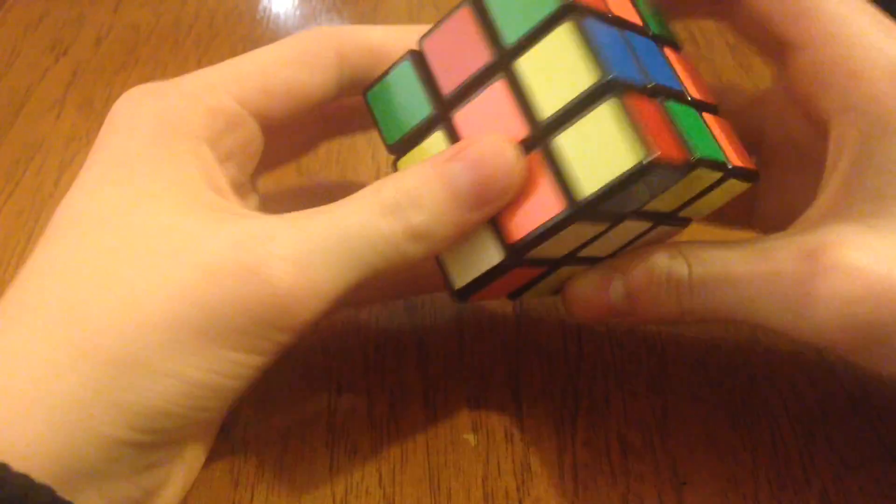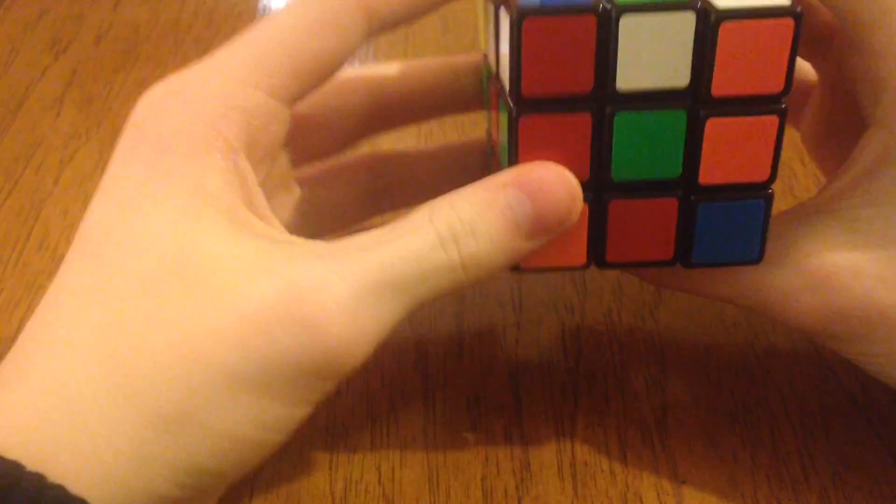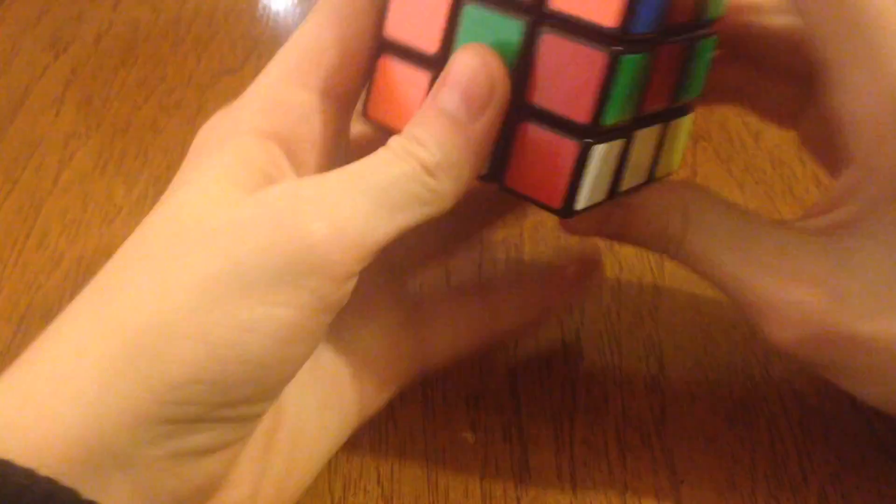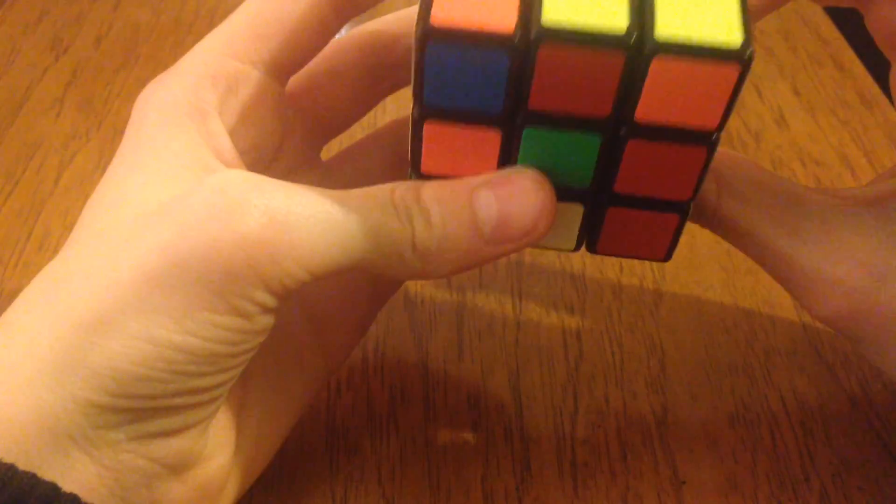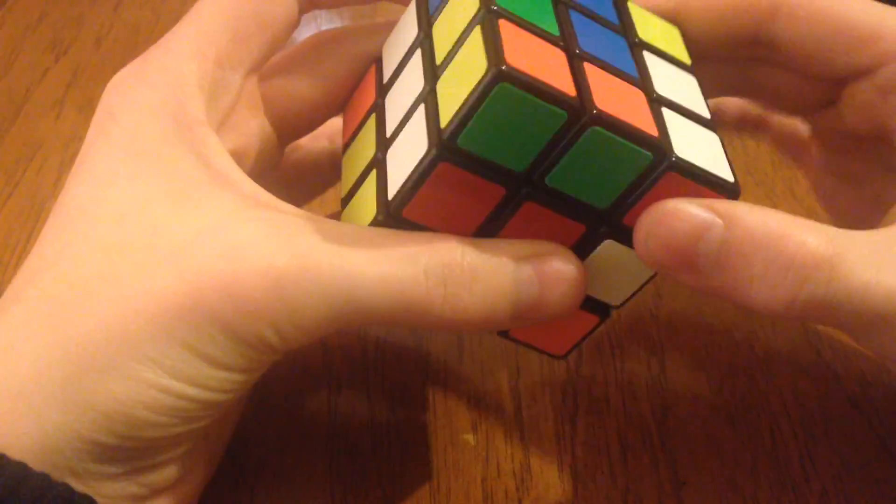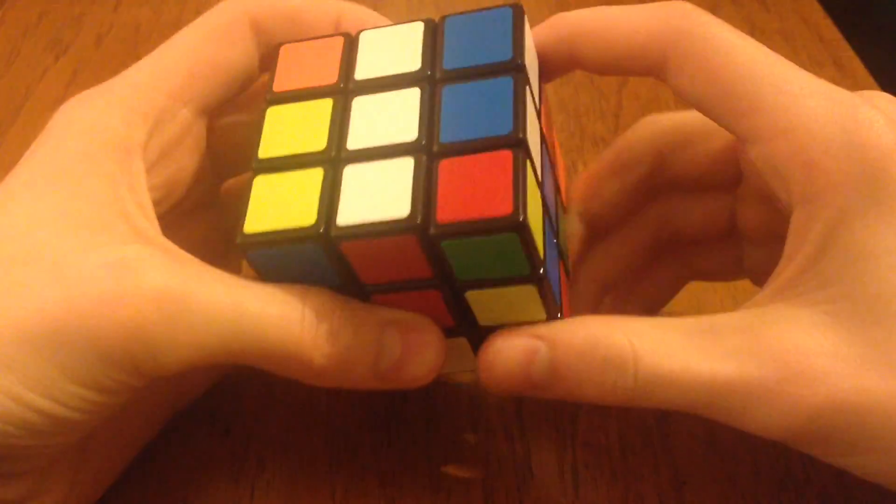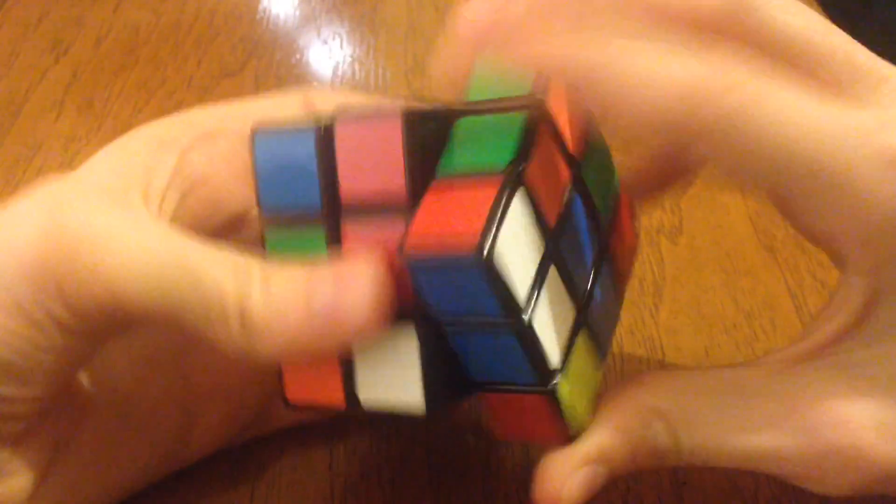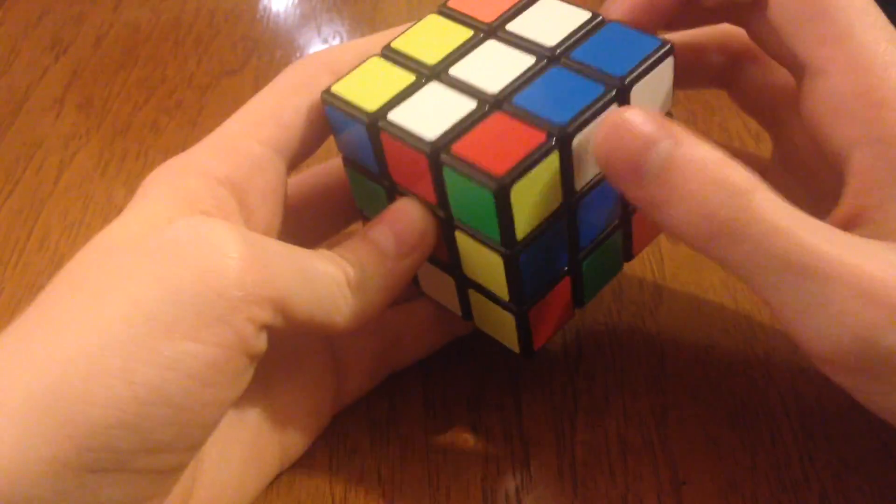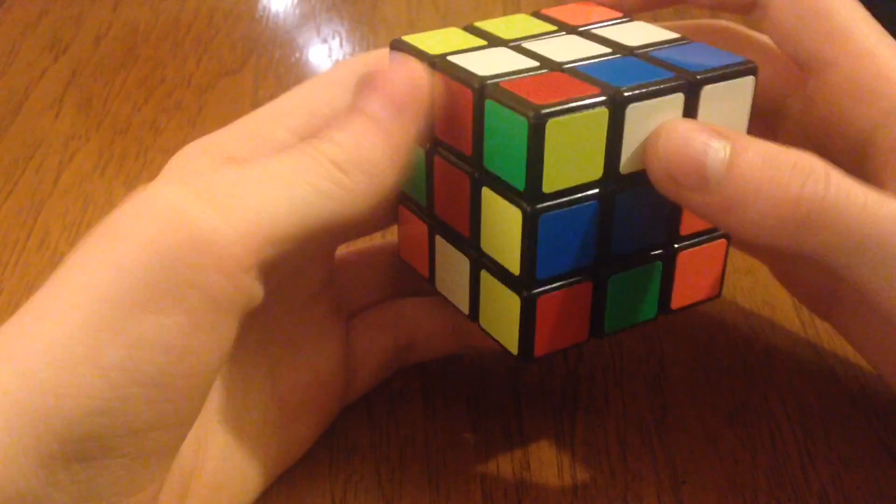And we already, luckily, have a white orange in the correct spot. So all we have left is the white blue up here, and the white green up here. Now, there's something that you're going to need to know about this step. When you spin a white piece into its spot, and the white side is on the wrong side, obviously, here,